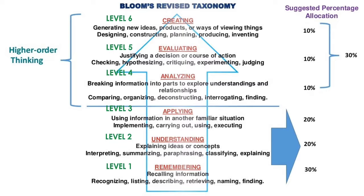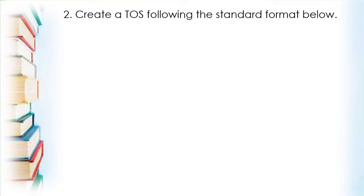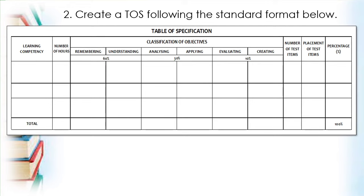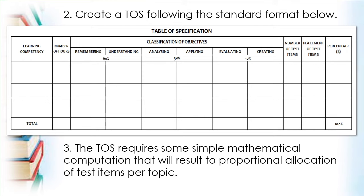Second of the things you need to know is the creation of a TOS table following the standard format. This is the standard format from DepEd. However, I innovated this into a simpler format without removing the salient parts — I'll show you later. And third, the TOS requires some simple mathematical computation that will result in proportional allocation of test items per topic.